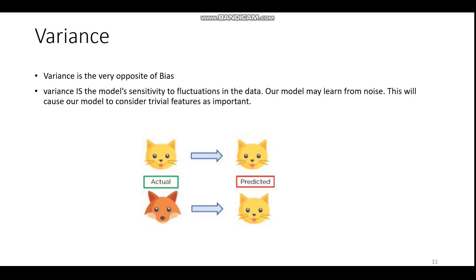Variance is the opposite of bias. Variance is the model's sensitivity to fluctuations in the data — a model may learn from the noise, causing it to consider trivial features as important. When we talk of bias, the model is trained with very basic features; when we talk of variance, the model is trained with too many features that are not even required. Essentially, the model has been trained with noise, which leads to the problem of overfitting.